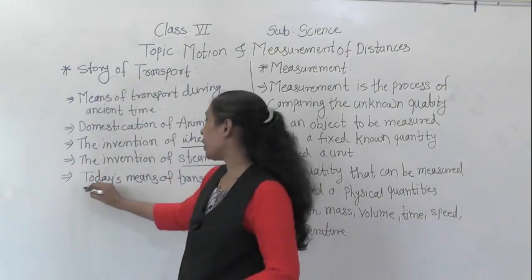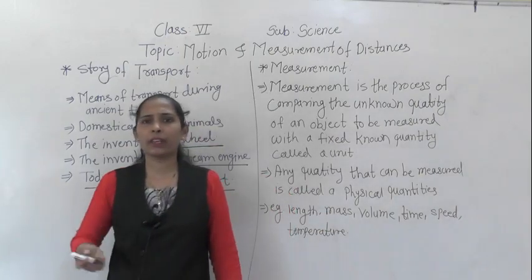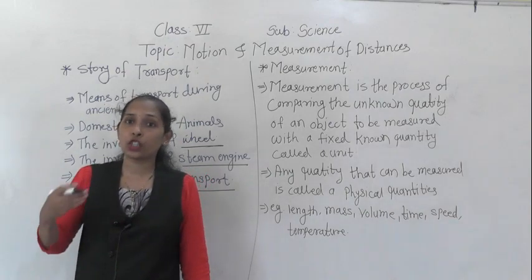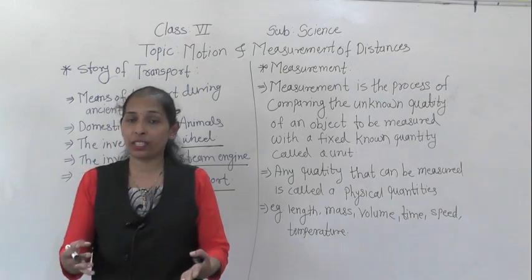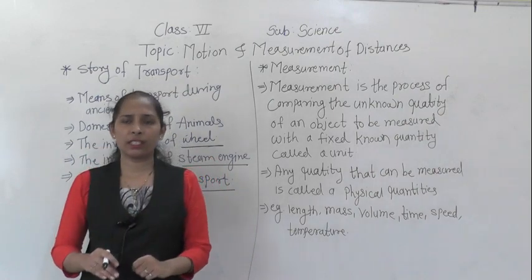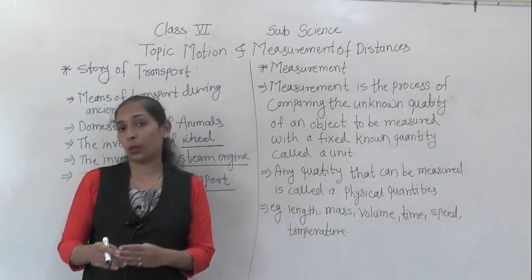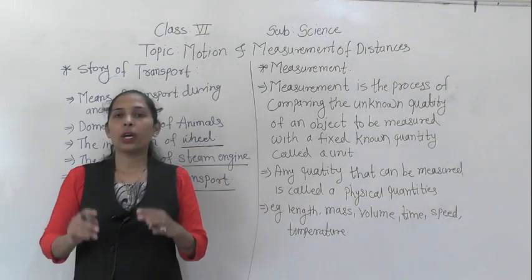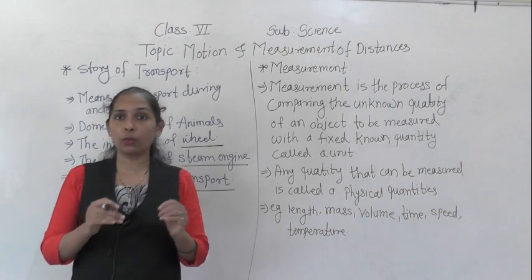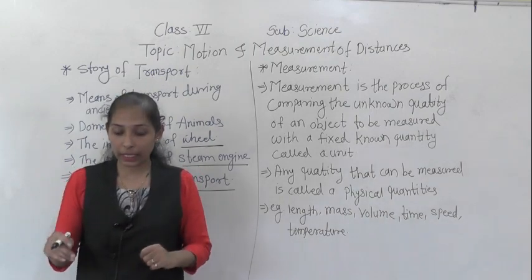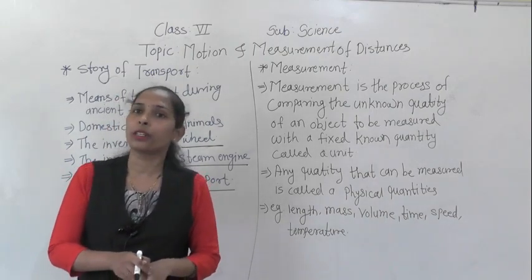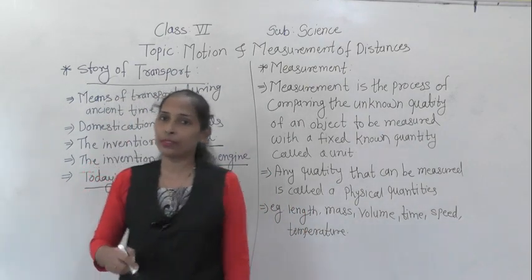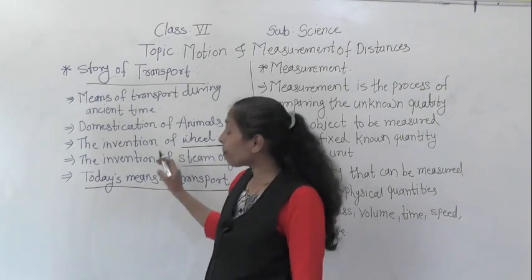Now let's talk about today's means of transport. Nowadays we have jet planes, different ships, bullet trains, and metros — all of these we can use to travel from one place to another. These high-speed automobiles help people get from one place to another and also reduce the time taken for traveling. That is the story of transport.